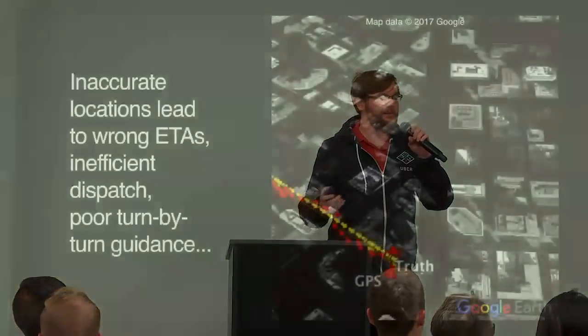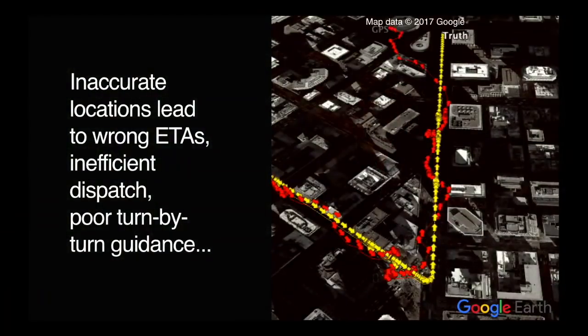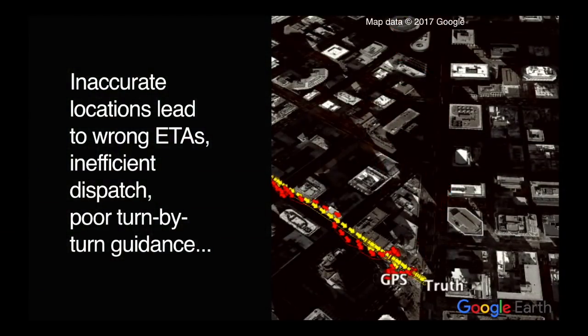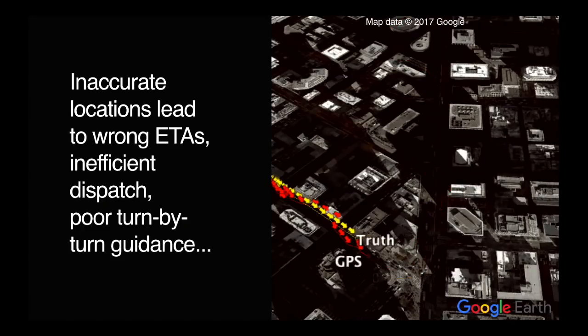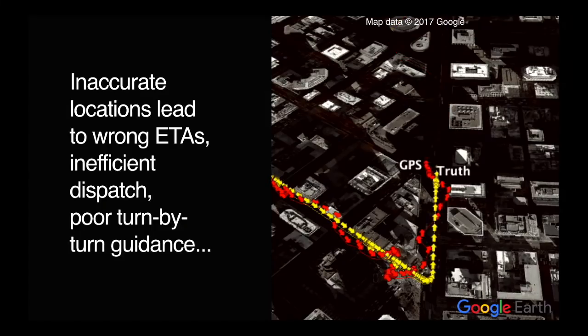When you get in high-rise urban canyons, this problem becomes worse. So here you can see that this is the raw data from a phone in a car plotted against the truth. Again, red is raw, yellow is truth. And you can see as you get further and further up Market Street towards the Financial District, the errors get worse and worse.